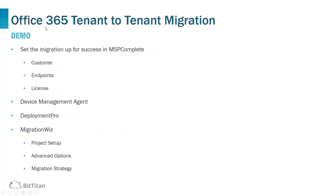I'm going to perform a demo for a tenant-to-tenant migration, which consists of four steps: set up the migration in MSP Complete by creating a customer, the endpoints or connectors to the source and destination tenants, and licensing the users. After that, configure the device management agent — the desktop agent deployed on all end-user computers via GPO or email — which will have the Deployment Pro wizard installed. Finally, create a MigrationWiz project to migrate mailboxes from the source tenant to the destination tenant.